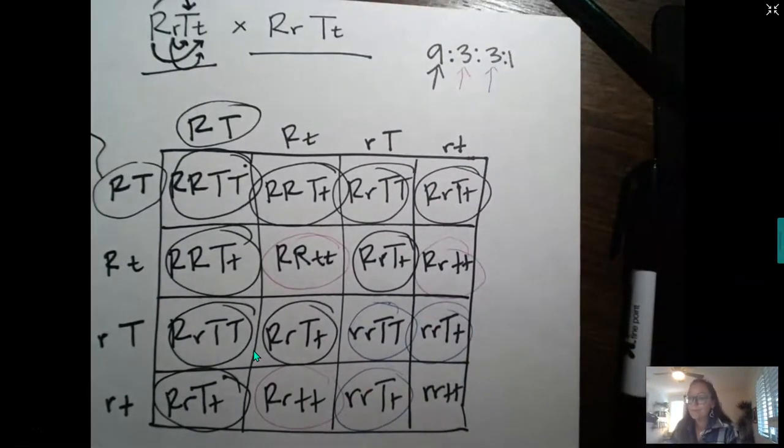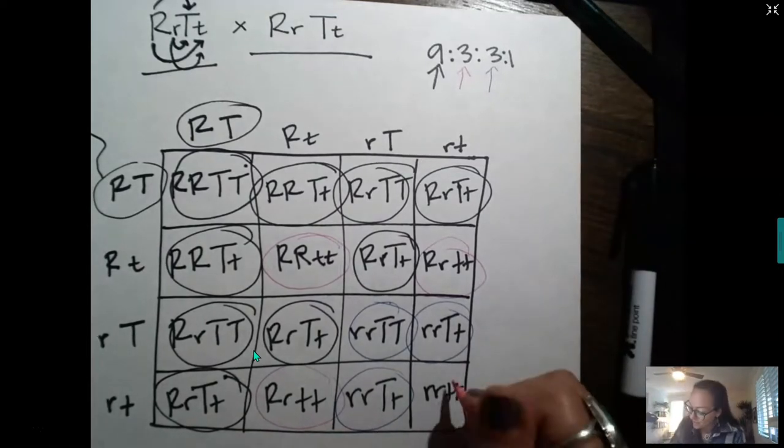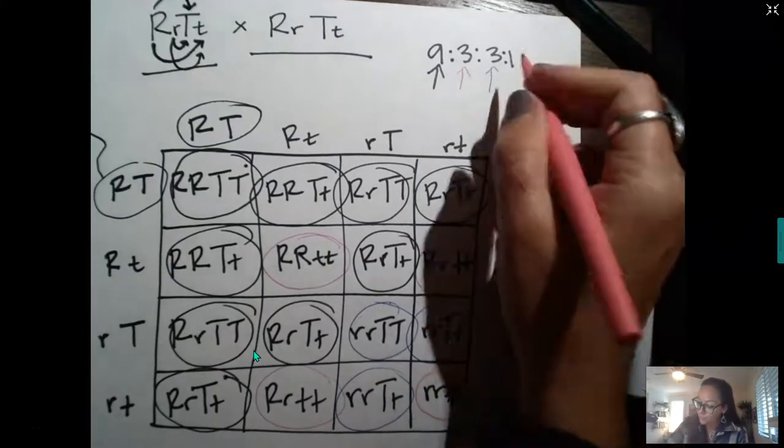And then we're going to look at what are the chances of a homozygous recessive for both traits? And there's only 1.